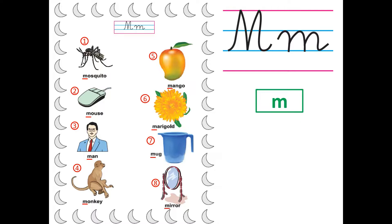Picture number 5. The summer fruit which is yellow in color and very juicy. M-ma-mango. Picture number 6. M-ma-marigold. It is a flower, children. It is called Gende ka phool in Hindi.